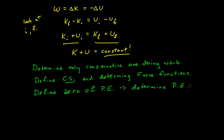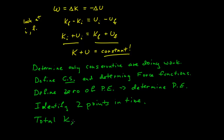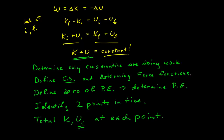Once we have our potential energy functions, we identify two points in time and then total the kinetic and potential energies. There may be more than one potential energy — there can be one for each conservative force doing work. Total the kinetic and potential energies at each point and set them equal, because the sum must be constant, assuming only conservative forces are doing work.